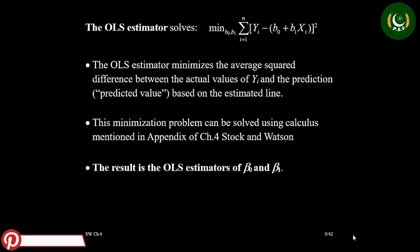As I was talking about minimizing sum of squares of errors, beta 0 and beta 1 are your population parameters which are unknown and we want to estimate these parameters by using sample data. What is ordinary least square? Ordinary least square basically minimizes the average square difference between the actual values of y and the predicted value based on the estimated line.